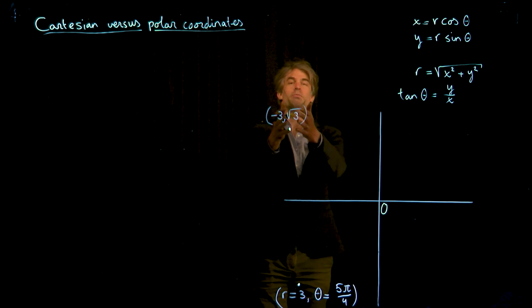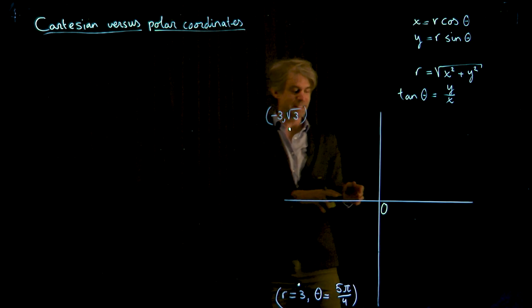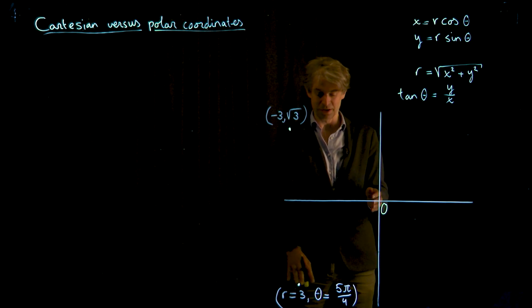Another way, this is called by the way Cartesian coordinates, the other way is polar coordinates, and there you give a distance from the origin, which is usually denoted by r. In this case r is 3.